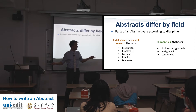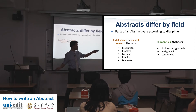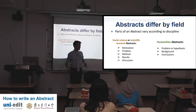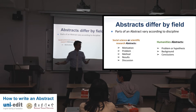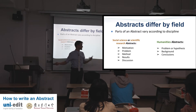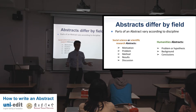Parts of an abstract vary according to discipline. For scientific research, in your abstract you're going to have motivation, problem statement, method, results, and discussion. Generally speaking, this is what you will all have in your abstract. Seems easy enough.